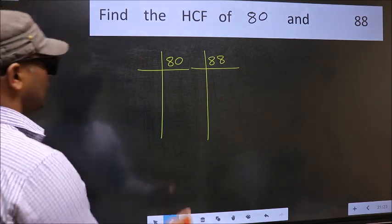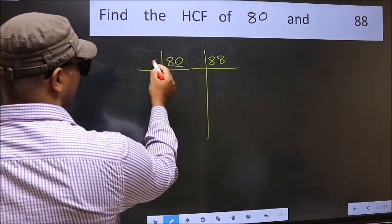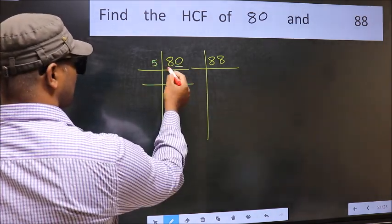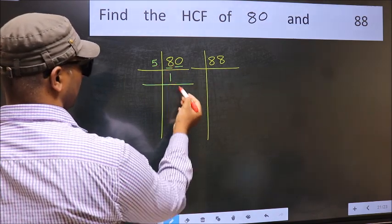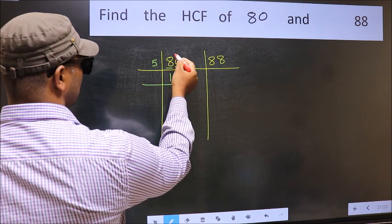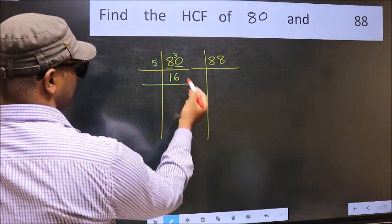Next. In this number, last digit is 0 so take 5. First number 8. A number close to 8 in 5 table is 5 once 5. 8 minus 5, 3, carried forward 30. When do we get 30 in 5 table? 5, 6, 30.